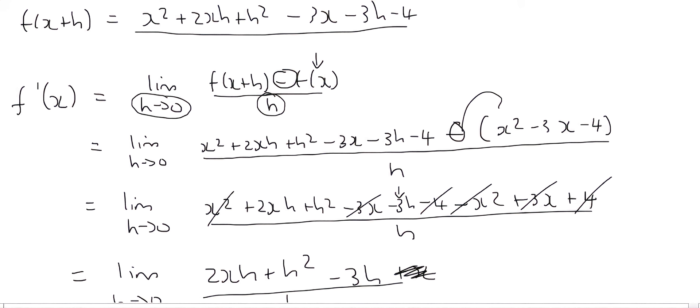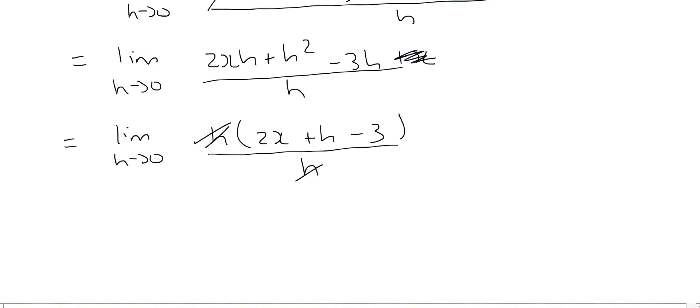But now if we scroll down we've just seen that these h's have cancelled. And so now all that we have left is 2x plus h minus 3. So now in the previous video we said that you can, as soon as you have something like this, you can just plug the limit value in.